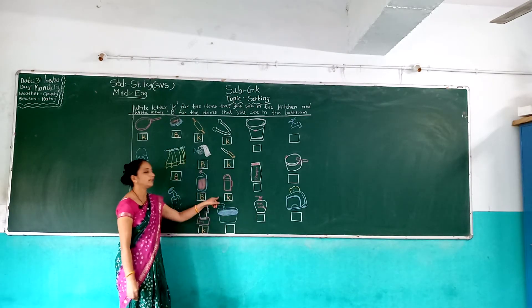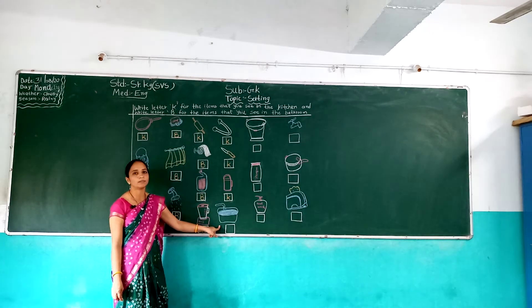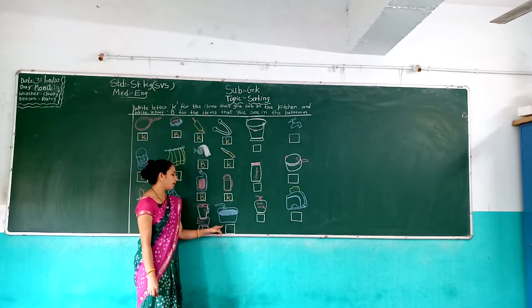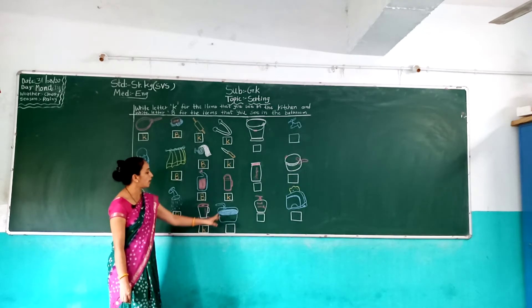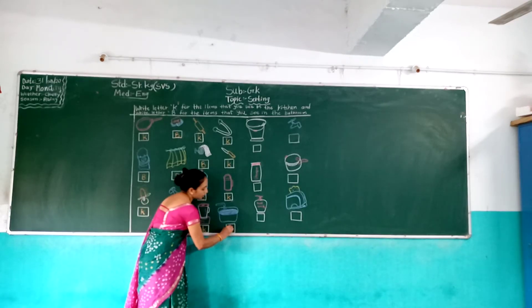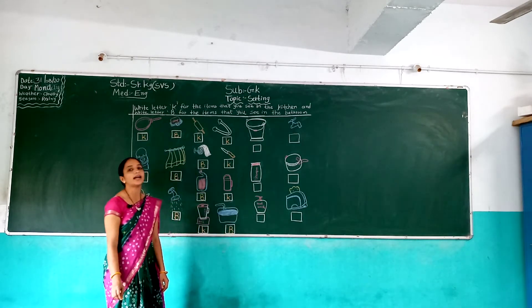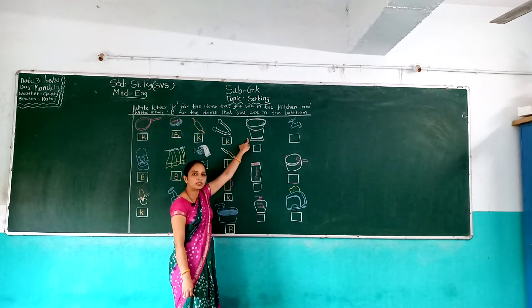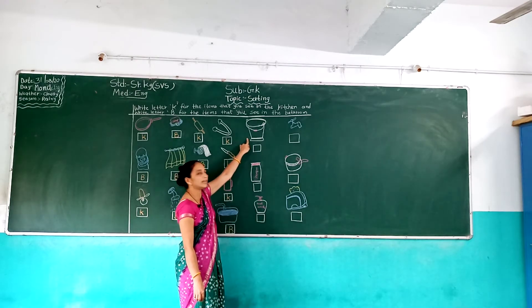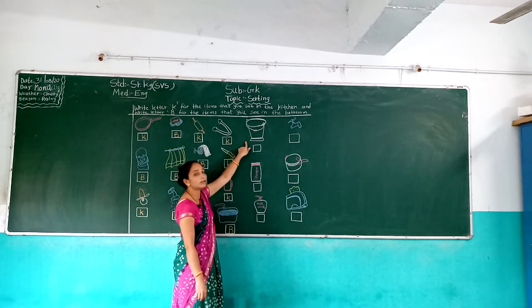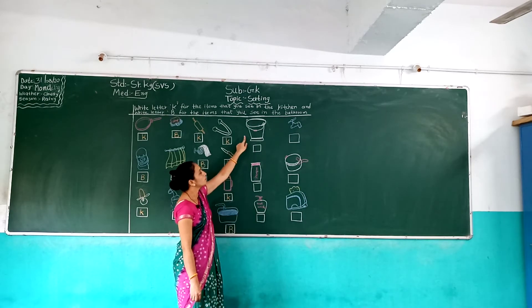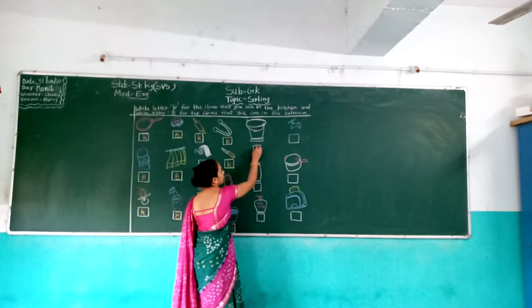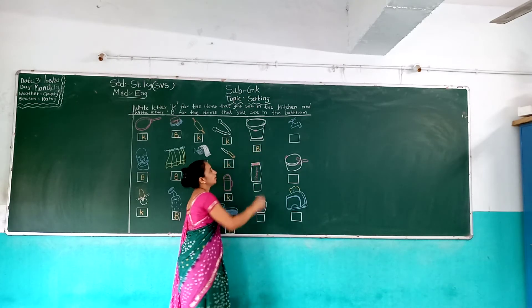And next, thermos — which picture is this? Thermos — thermos kitchen में होता है, तो kitchen item है, उसमें हमें कौनसा letter use करना है? K letter. So right here K. And next, bathtub — which picture is this? Bathtub — bathtub कहाँ होता है? Bathroom में. तो bathroom item है इसलिए हम यहाँ sorting करके B write करेंगे. जो kitchen item है उसमें K letter और bathroom item है उसमें हम B letter use करेंगे. And next, bucket — which picture is this? Bucket — bucket कौनसा item हुआ? Bathroom. तो हमें यहाँ B letter use करना है. So right here B.